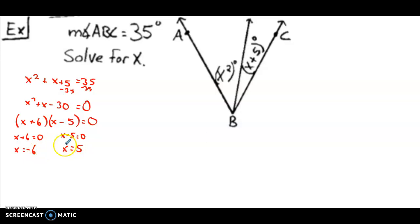However, we always have to check with these kinds of problems. When we talk about angle measurements, they have to be positive. So this value of x equals negative 6 is throwing up a little bit of a red flag. If I plug it in, negative 6 plus 5 into this angle, that's negative 1. We can't have a negative angle. So this is not a good answer.